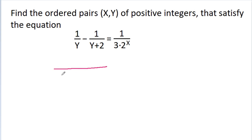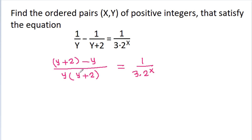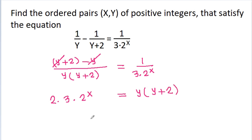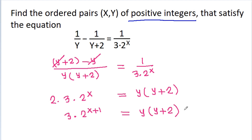Here, y times (y+2) will be the LCM and we will get (y+2) minus y is equal to 1 divided by 3 times 2 to the power x. The y's cancel, and if we cross multiply then we get 2 times 3 times 2^x is equal to y times (y+2), and 2 times 2^x will be 2^(x+1), so 3 times 2^(x+1) is equal to y times (y+2). We have to find positive integers x and y, meaning they should be greater than or equal to 1.